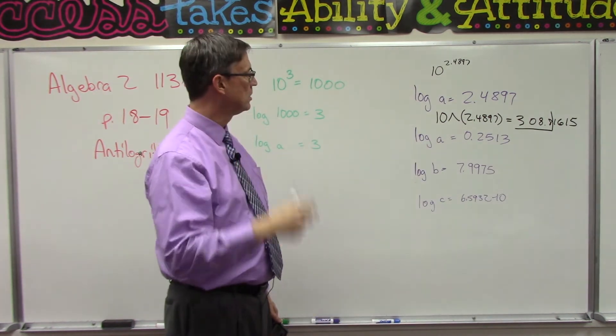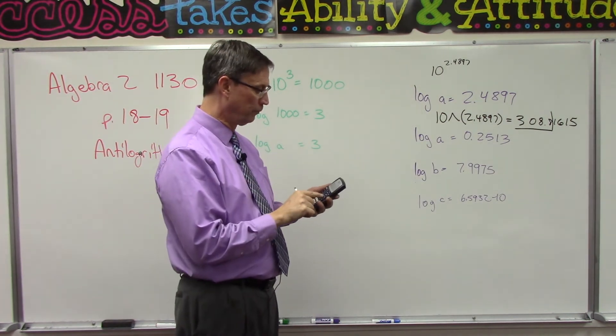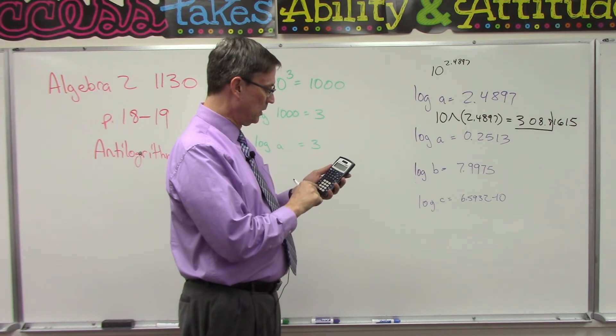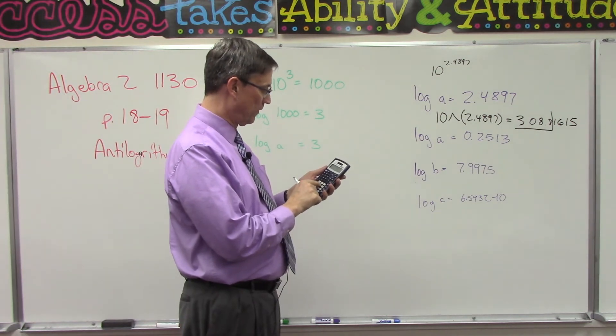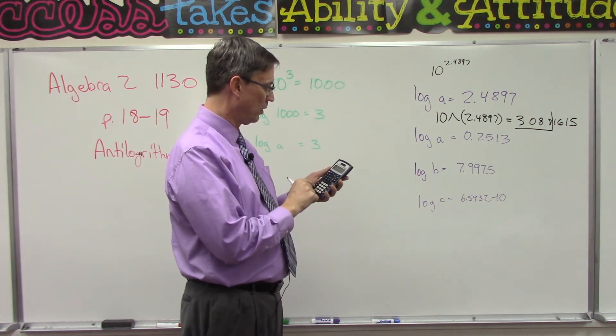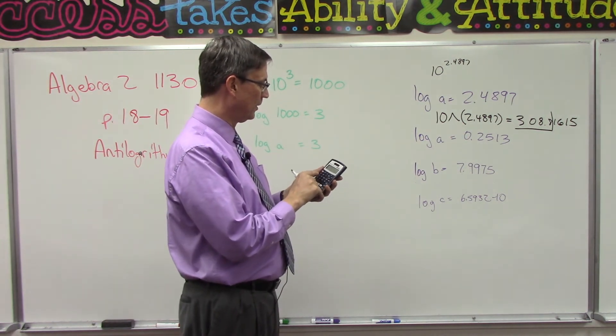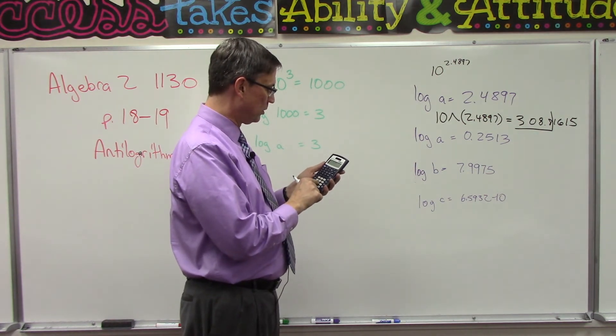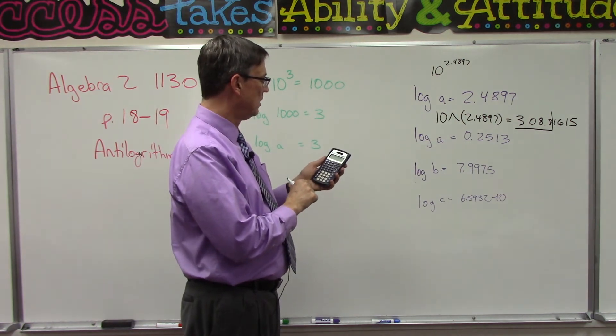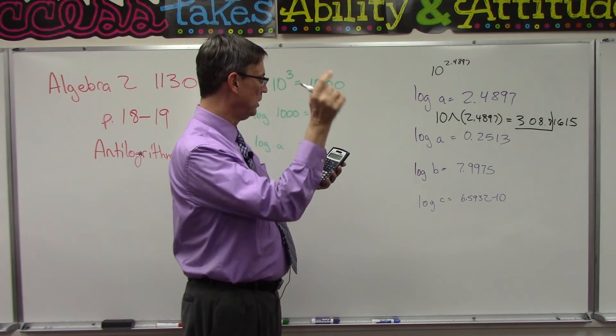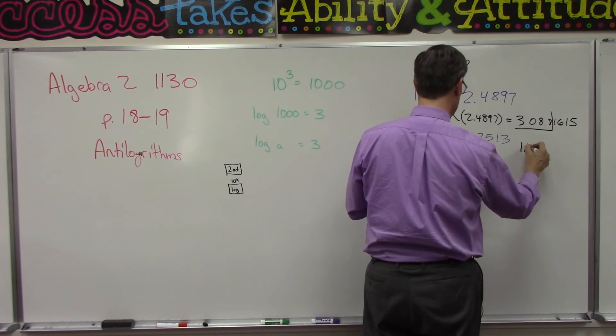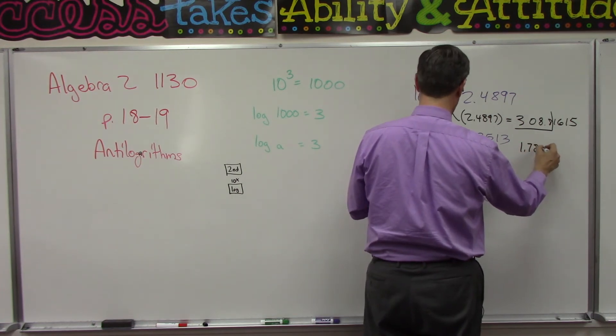All right, let's try another one. This one's a decimal number. Here we go. Hit clear, second function, log, 0.25. Whoops, I hit a four. I gotta hit clear. I gotta start over. All right, second function, 0.2513. Hit enter equals. And for that one, see if you got the same thing I did. 1.78, and then I need to round that three off to a four because I want only four digits.